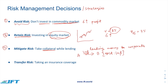If party B defaults and does not pay the money back, the bank has gold worth one million dollars. In case of default, the bank will just sell the gold and recover the money. This approach is known as risk mitigation, through which you can minimize your risk.